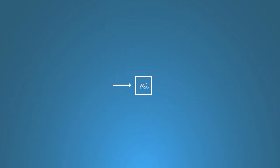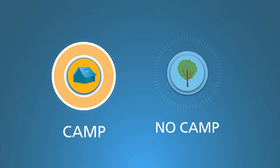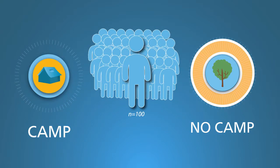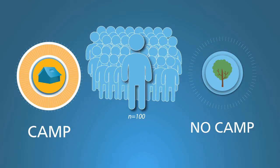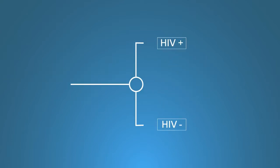This square represents a decision node — the choice of no camp versus a circumcision camp. CEA always examines a comparison. Here, the comparison option is doing no camp, so in this tree, all 100 men go to either no camp or circumcision camp. The subsequent branches show what happens as a result. Next comes this circle, which is a chance node. Chance nodes show the mix of possible consequences for each option. In this simple tree, there is only one chance node per option, though in most trees there are many branching chance nodes.